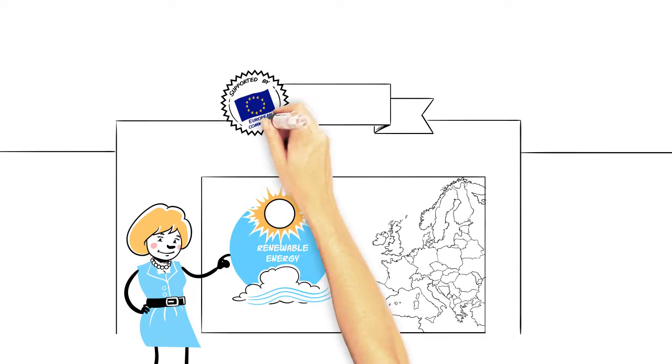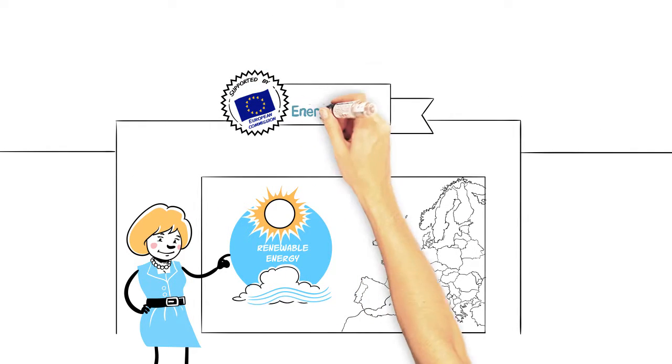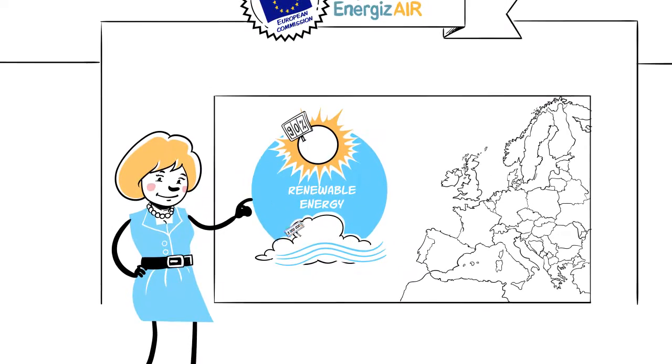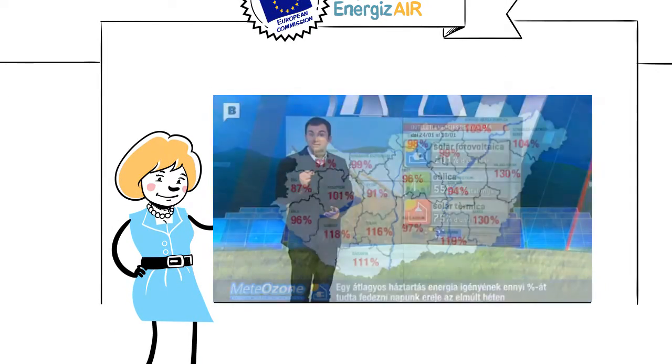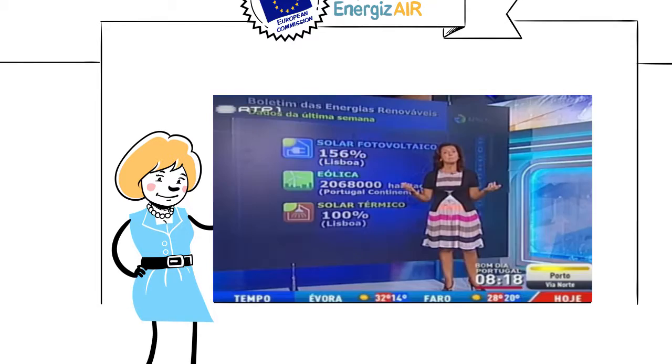Supported by the European Commission, the two-year Energizer project has put figures to this gift from the sky and included them in the weather forecasts of 10 countries.